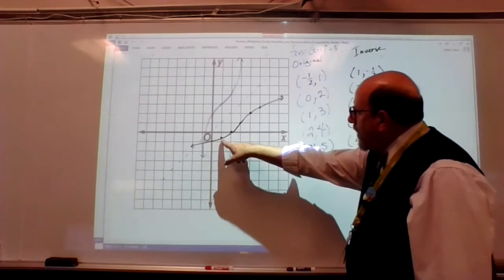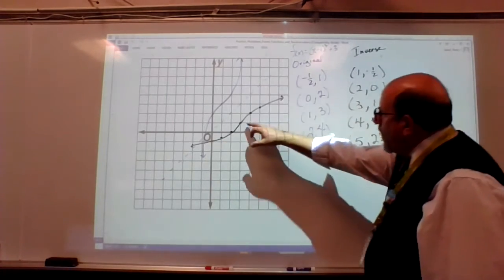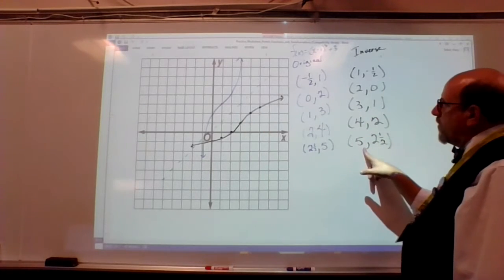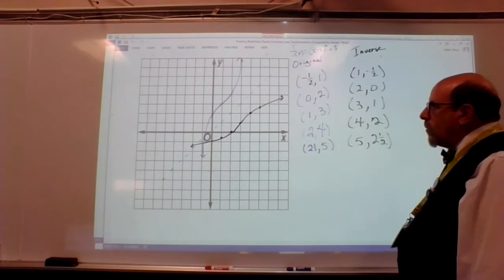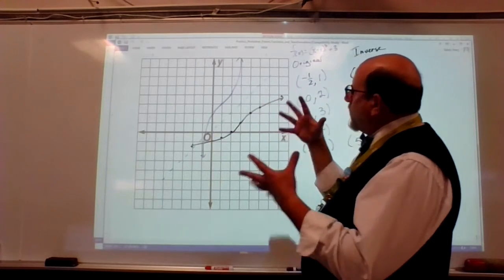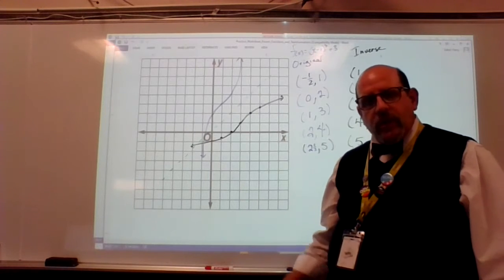So I went 1, negative 1 half, 2, 0, 3, 1, 4, 2, and then 5, 2 and 1 half. It is a little high, but that's not the end of the world. And I just wanted to recreate that x cubed shape, that cubic function shape, just a little bit. And there we go.